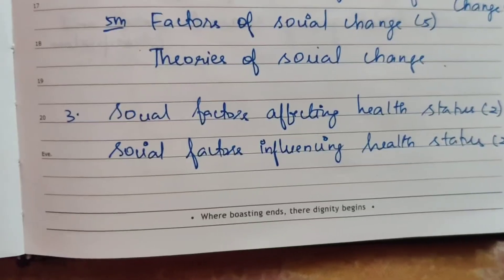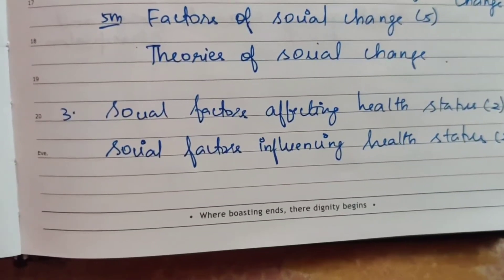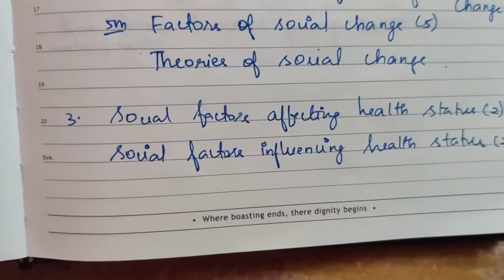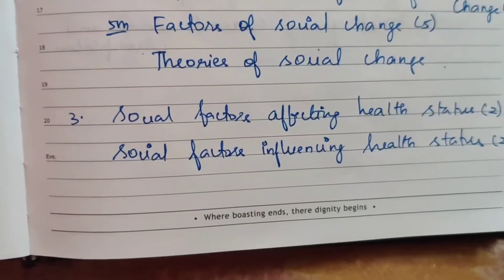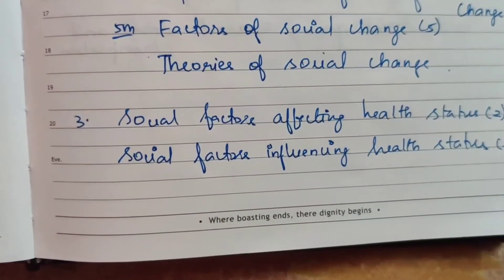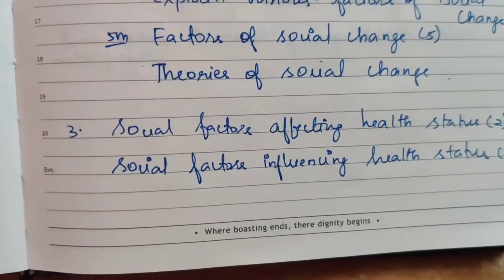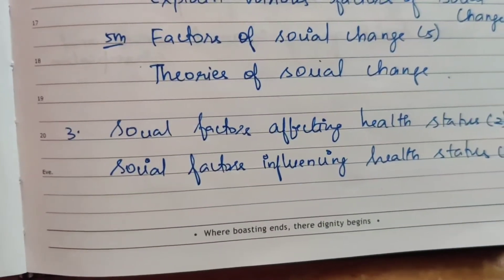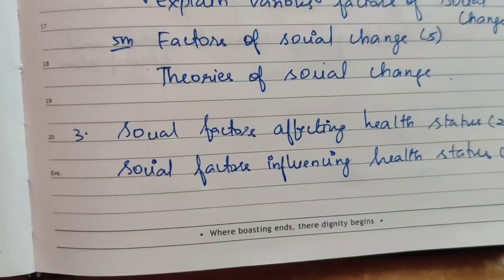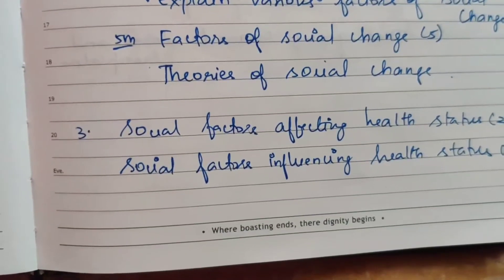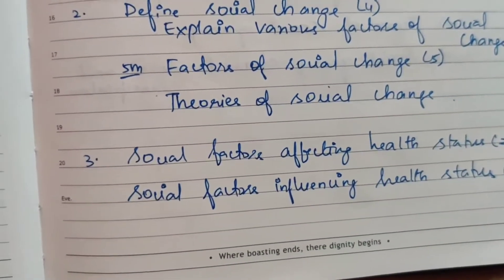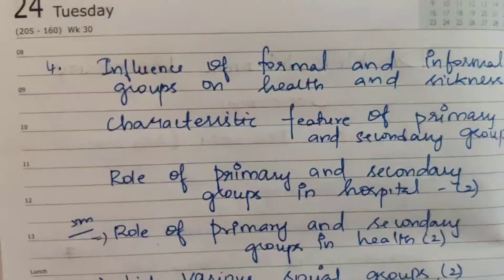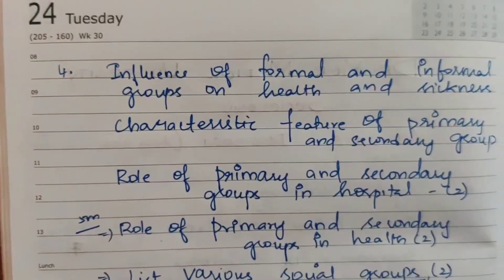Third question: Social factors affecting health status — asked two times, for 15 marks and 5 marks. Social factors influencing health status is a similar question, also asked two times. This topic is worth 15 marks.